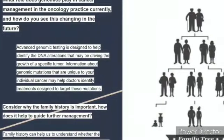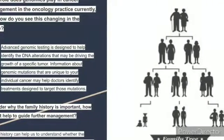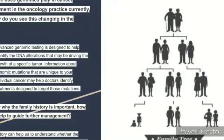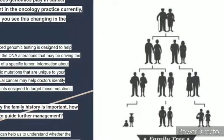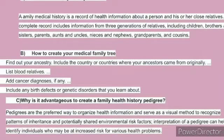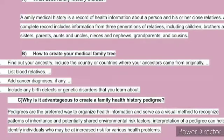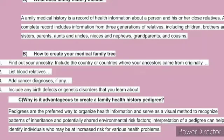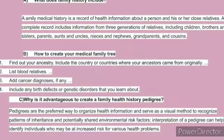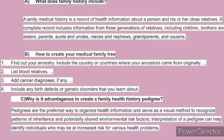Why is family history so important and how does it help us make a further management plan about treatment? Family history is very important because we can relate it to environmental factors, polygenic factors, and other factors — as mentioned before — to make a treatment plan if the patient develops any kind of cancer. Family history includes a record of health information about a person and their close relatives. A complete record covering three generations of relatives includes children, brothers, uncles, nephews, grandparents, cousins — everyone — to create a complete family tree to assess if there is any risk of cancer developing in this patient.